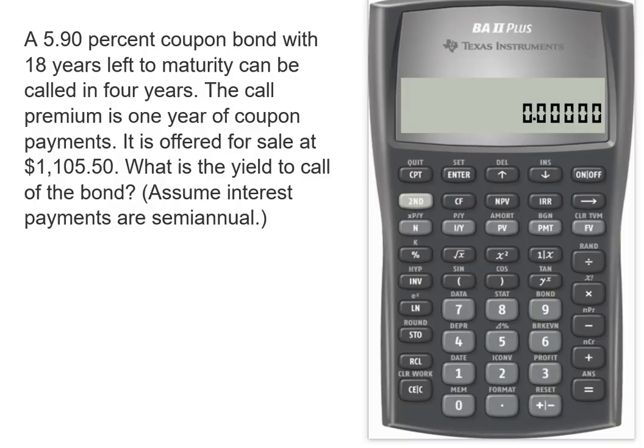Hey ladies and gentlemen, it's Professor Williams and today we're going to look at yield to call of a bond. We've got a 5.9% coupon bond with 18 years left to maturity, but it can be called in four years and it's got a call premium of one year of coupon payments.